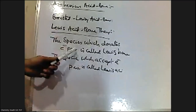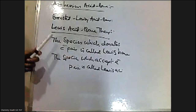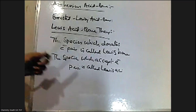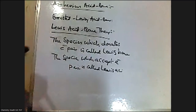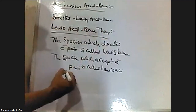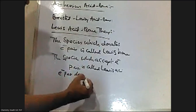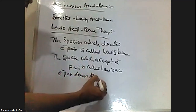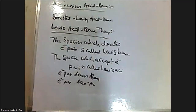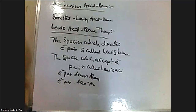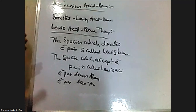Simply put, the species which can donate an electron pair is called a Lewis base, and the species which can accept an electron pair from others is called a Lewis acid. Electron pair donor is called base, and electron pair acceptor is called acid. Let me explain with an example how this theory explains the acidic and basic nature of substances.